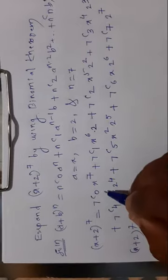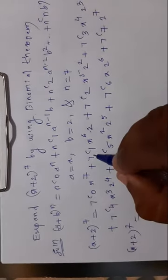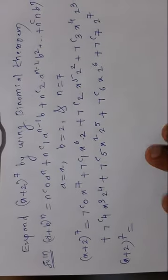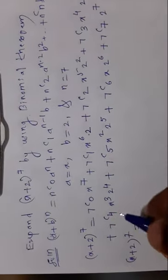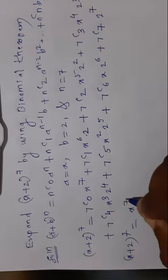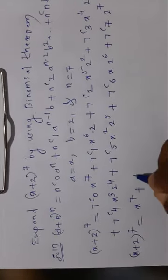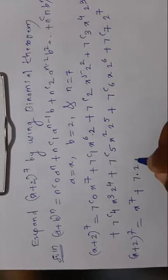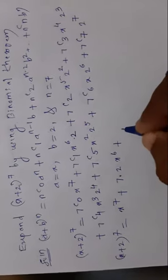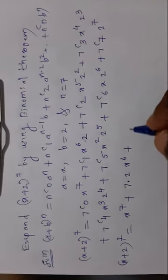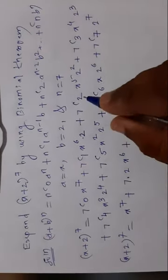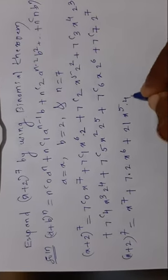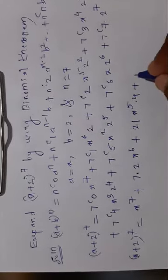To solve the combinations 7C0, 7C1, 7C2, etc., we can use a calculator. 7C0 = 1, so the first term is x^7. 7C1 = 7, so the second term is 7 · 2 · x^6 = 14x^6. 7C2 = 21, so the third term is 21 · 4 · x^5 = 84x^5. 7C3 = 35, so the fourth term is 35 · 8 · x^4 = 280x^4.